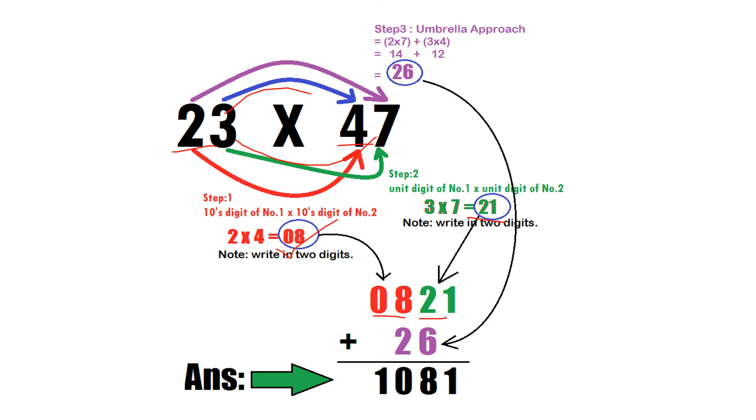Then umbrella, 3 4s are 12 and 2 7s are 14 added. We got 26. We'll write here. Nothing will be written below the unit digit. That is, we'll not write anything below 1. So we'll add 26 like this. And we'll get 1081 as answer. Very interesting and very easy method.